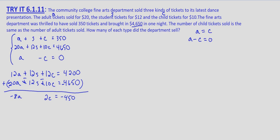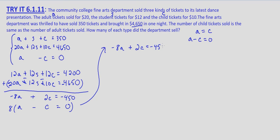Now I can bring in our third equation. To eliminate A, I'll multiply A minus C equals zero by 8, giving 8A minus 8C equals zero. Adding this to negative 8A plus 2C equals negative 450: negative 8A plus 8A is 0; 2C minus 8C is negative 6C; and negative 450 plus 0 is negative 450. Dividing both sides by negative 6, we get C equals 75.